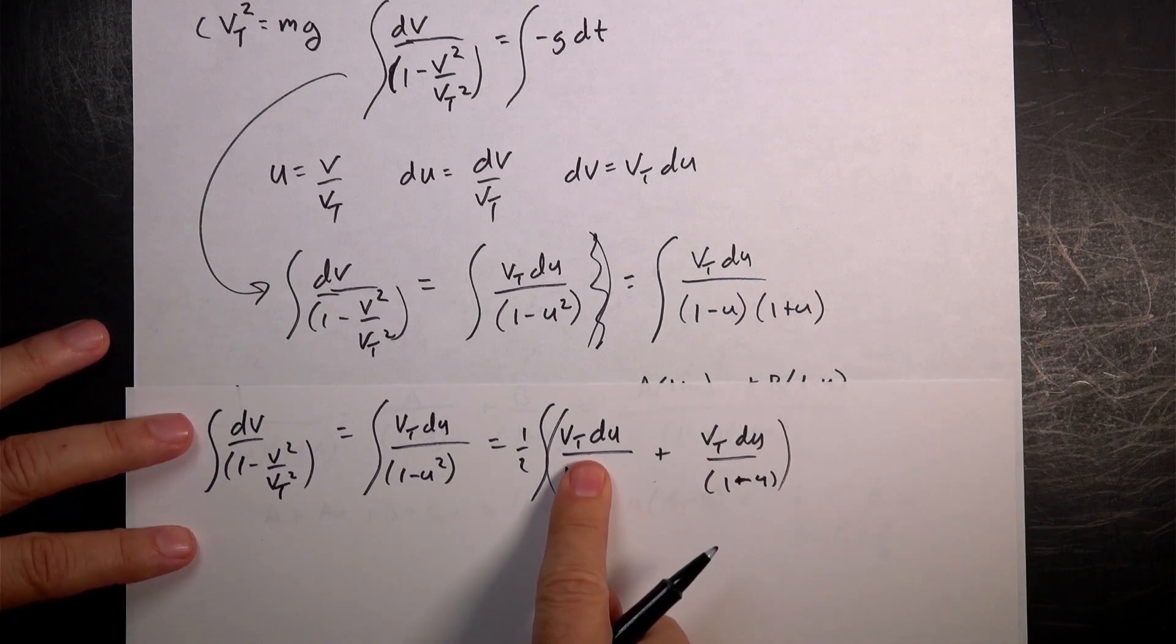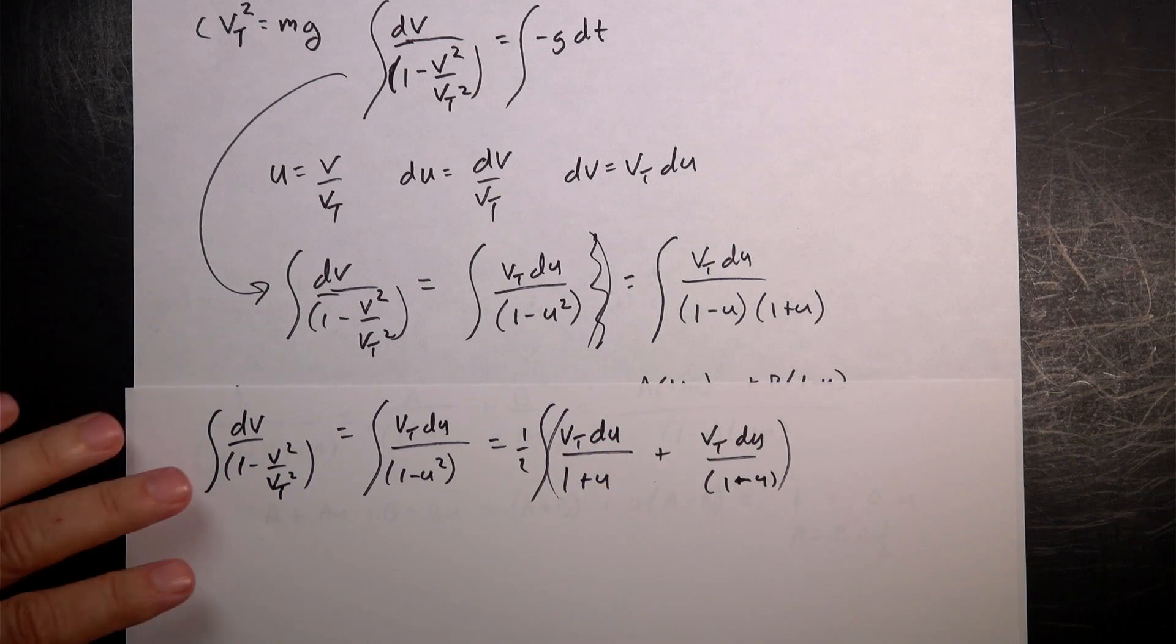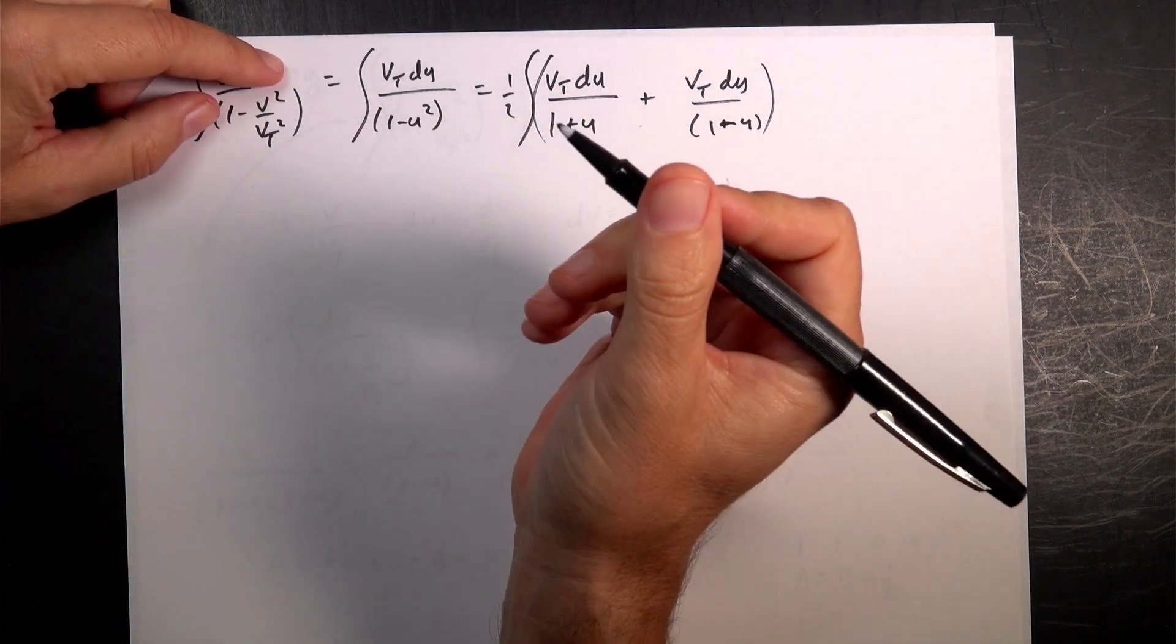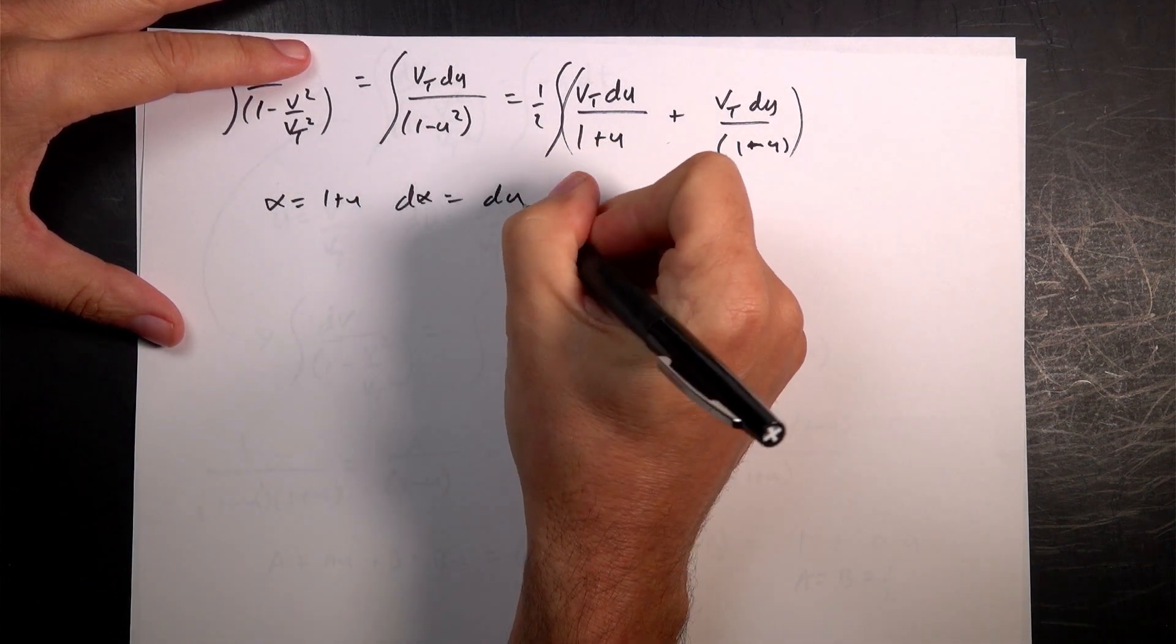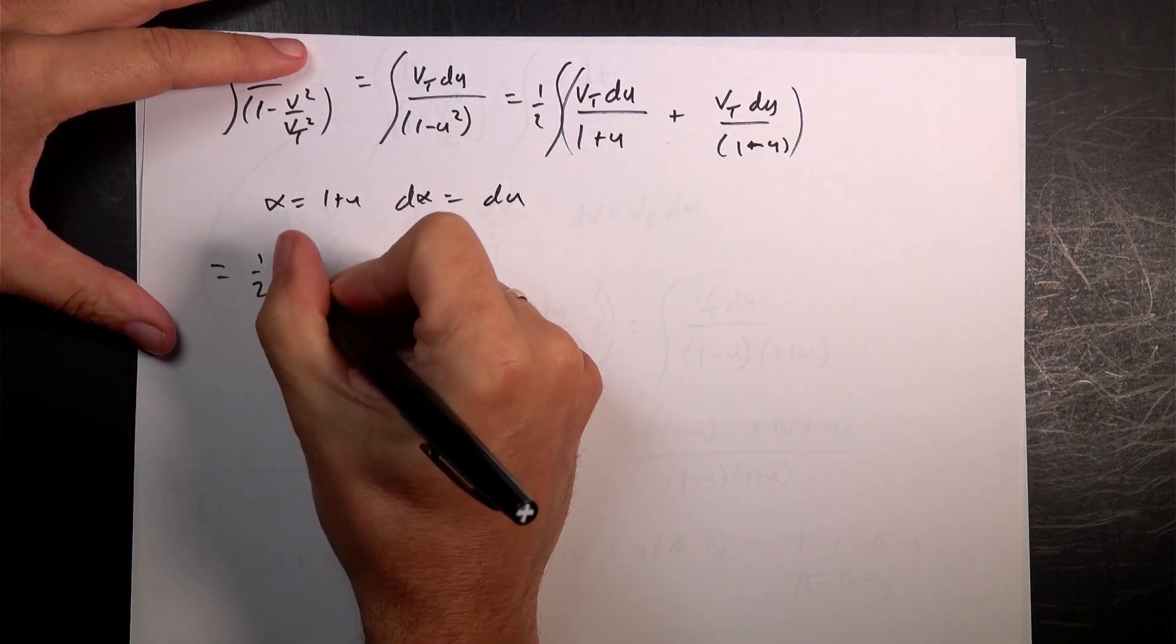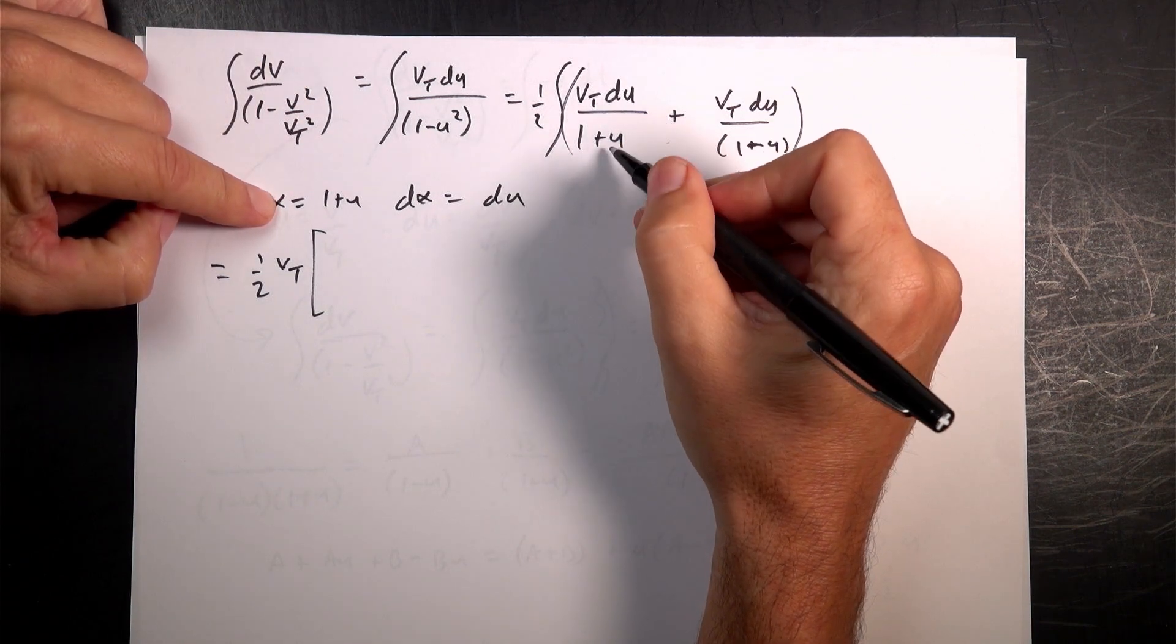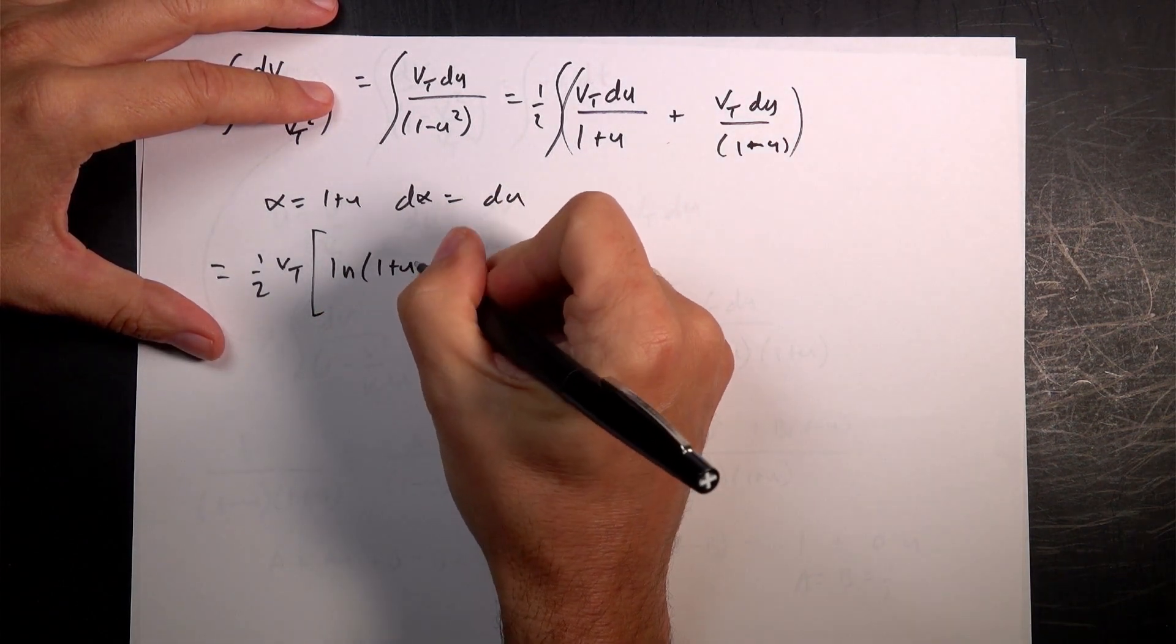Now that I can integrate, right? I can pull the vt out front and I have the integral of du over 1 plus u. Now, I could do another u substitution and I guess I technically should write that out. I just don't want to. Let's just say alpha, which is a dumb variable. I'll say it. Alpha is 1 plus u. d alpha is going to be du. So this is going to be, this integral is going to be, I'll put equals, 1 half vt. And then that first integral is going to be equal to d alpha over alpha, which is the natural log of alpha. So I get the natural log of 1 plus u. I double substituted. That's what happened.